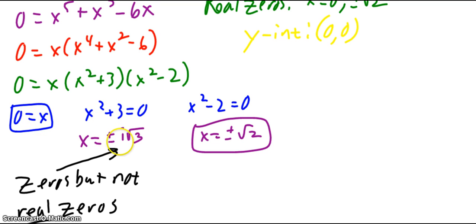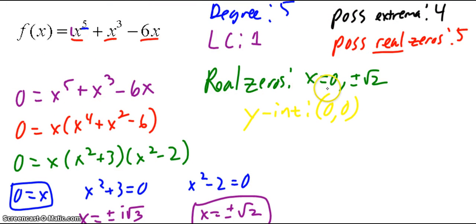Here, I get x equals plus or minus i root 3. So these are zeros, but they're not real zeros. And then here, I get x equals plus or minus root 2. So my actual real zeros are x equals 0 and plus or minus root 2. So there were 5 possible real zeros, but I only ended up with 3 actual real zeros. And then my y-intercept was 0, 0 again, and I found that through the x-intercept or real zero of x equals 0.